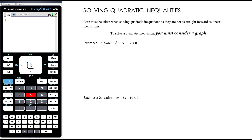We just solve them in the same way we do an equation, except when we're multiplying or dividing by a negative we flip the sign and everything's fine. However, that only works for linear inequalities. Every other kind of inequality — a quadratic, a cubic, an exponential, a logarithmic, a sine, cosine or tan inequality, whatever it might be — you must consider a graph.